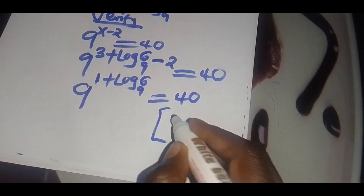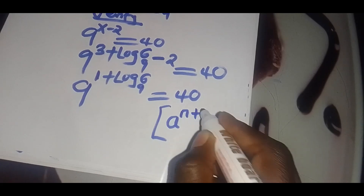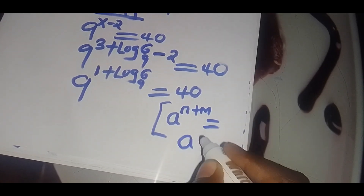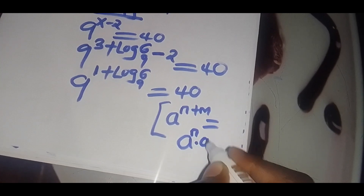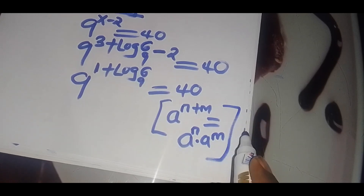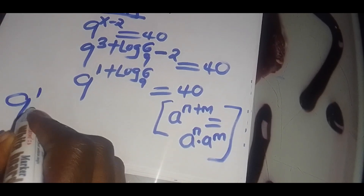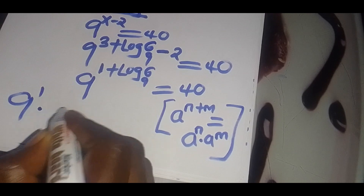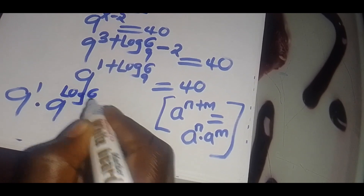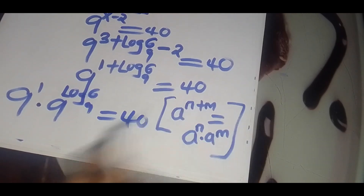Now, if you have a to the power n plus m, this is equal to a to the power n, multiplied by a to the power m. Applying this identity, we're going to have 9 to the power 1, multiplied by 9 to the power log 6 to base 9, which is supposed to give us 54.